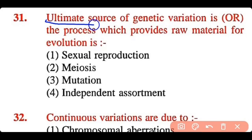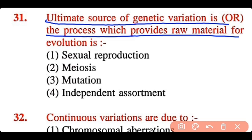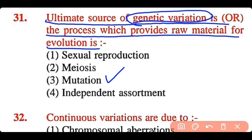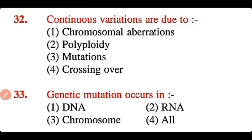Question 31: The ultimate source of genetic variation, or the process which provides raw material for evolution, is: sexual reproduction, meiosis, mutation, or independent assortment. The correct answer is option 3. Mutation is the ultimate source of genetic variation and provides raw material for the evolution of new species.